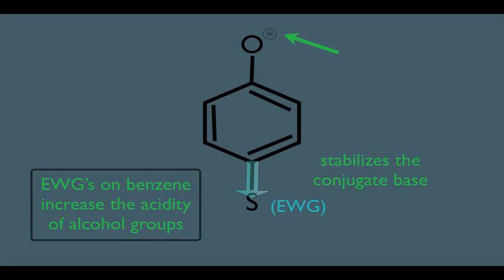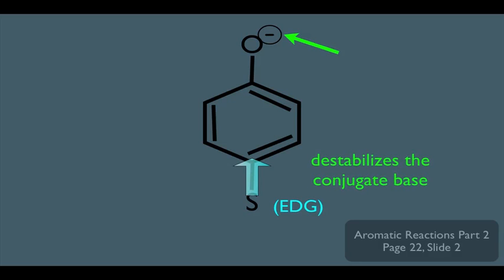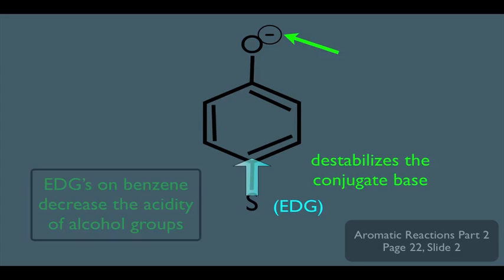Let's look at the opposite case. What if your substituent happens to be an electron donating group? Then he overall donates electrons to the benzene ring. Adding electrons to that negative charge makes it even more negative. More negative again means higher energy, therefore that would destabilize the conjugate base. Hence our second key point: electron donating groups on benzene decrease the acidity of alcohol groups.